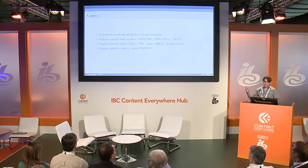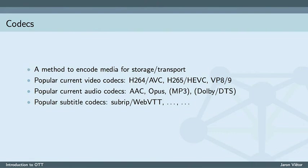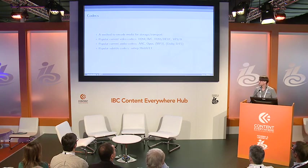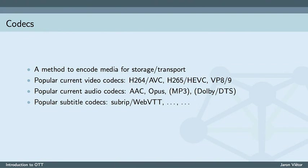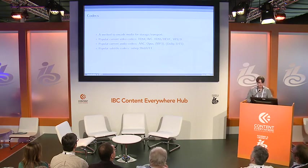For audio, we have similar codecs. There's AAC, which is the current most popular choice. Opus is something I personally think is the holy grail of audio — an audio codec that can do literally anything. MP3 is kind of on the way out, but everyone knows it, so I felt obligated to list it. And there are the popular choices for surround sound like Dolby and DTS, which are not used over the internet often because most computers are not connected to a surround sound installation. For subtitles, we have Sub-Rip, which is commonly ripped from DVDs, and WebVTT, which is used by Apple. There are literally hundreds of other subtitle standards.